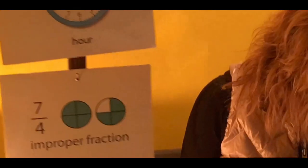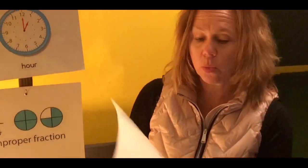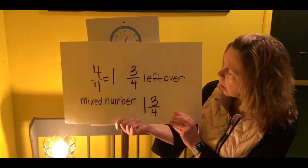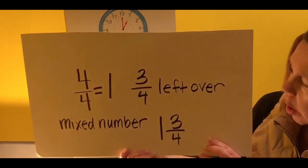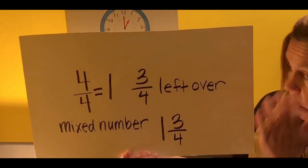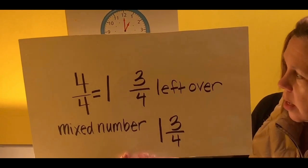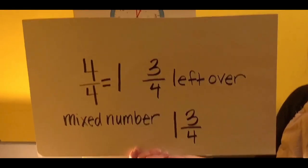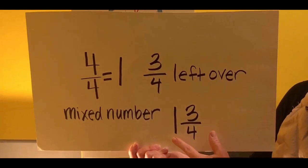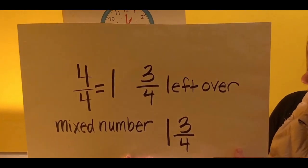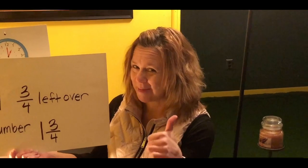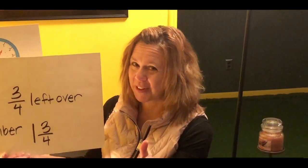Another way to express a fraction greater than one would be a mixed number. In the same example, four over four, or four out of four, equals one. There's three fourths left over. So our mixed number would be one and three fourths. Thank you for watching this week's Thumbs Up Math Trivia. Have a great day. Now here's Ryder with the weather.